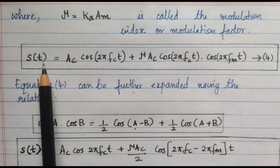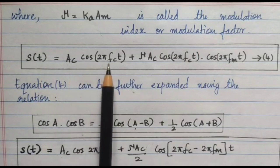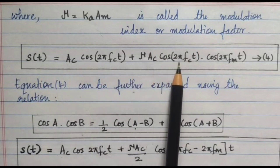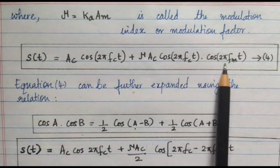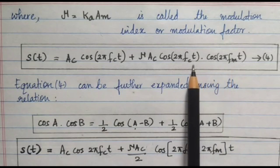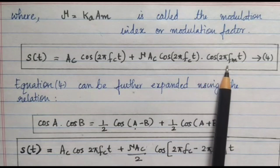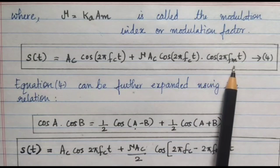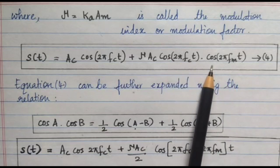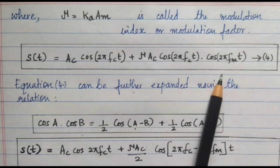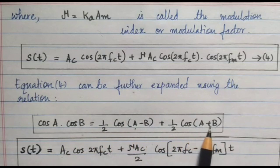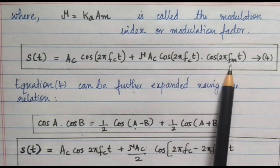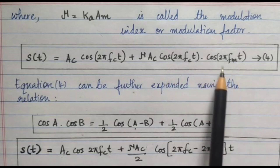The previous equation can be expanded and written as S(t) = AC cos(2π FC t) + μ AC cos(2π FC t) · cos(2π FM t), writing FC first since it is the high frequency carrier signal and FM is the low frequency message signal. This can be further expanded using the trigonometric relation cos(a) · cos(b) = ½ cos(a−b) + ½ cos(a+b), applying it to the second term.